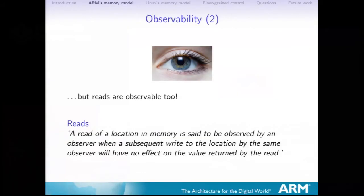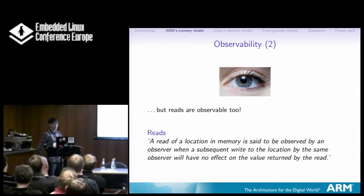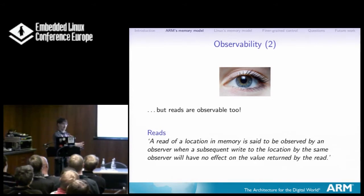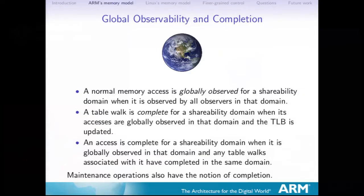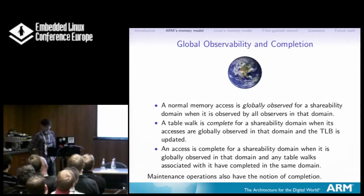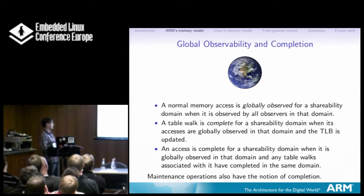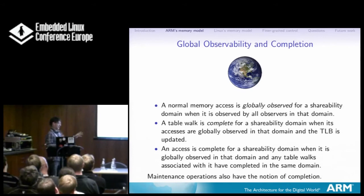You can also observe reads, which is a bit harder to get. A read doesn't really have a side effect, at least not on normal memory. What does it mean to observe a read? It means that if I do a subsequent write to that same location, I'm not going to affect the value that you read. If I can still get a write in there — maybe your read is held back somewhere and I can get my write into some buffer — then I haven't yet observed your read, because I can still change the effect of it. We then have global observability and completion: a normal memory access is globally observed for a shareability domain when it's observed by all observers in that domain.